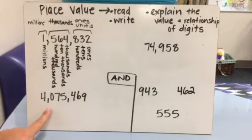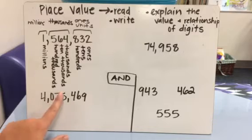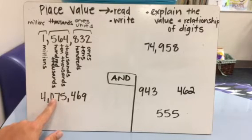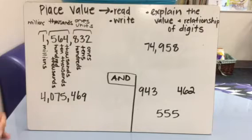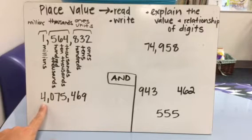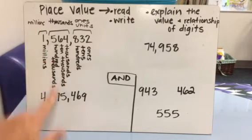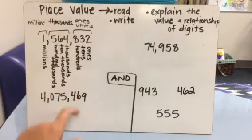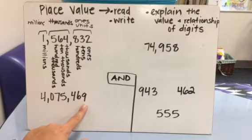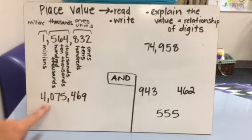What I want you to look at down here is numbers like this can be tricky when you have a zero as a placeholder. A lot of times in these bigger numbers, it can get a little bit confusing. So I'm just going to model that one for you. This is 4,075,469. So that's how you would read a number when there's a zero as a placeholder.